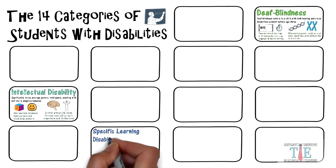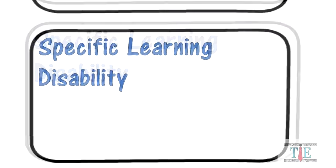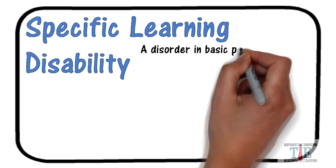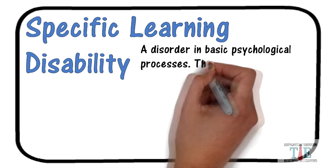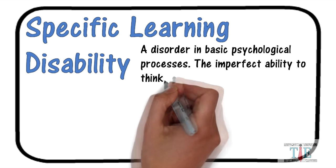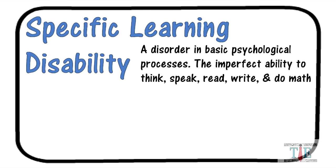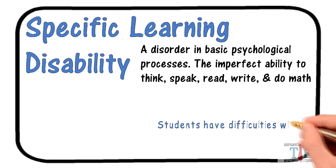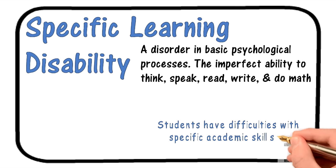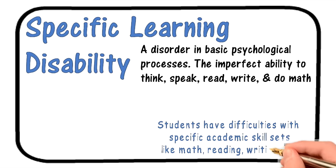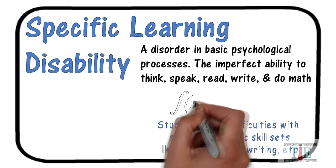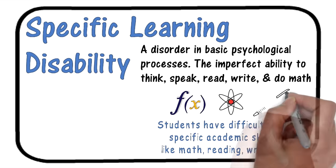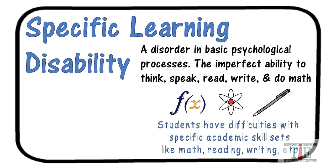Next up: specific learning disability. Specific learning disability can be defined as a disorder in basic psychological processes and the imperfect ability to think, speak, read, write, and do math. Students have difficulties with specific academic skill sets, like math, reading, writing, etc. Students may struggle processing information in one subject or skill set as opposed to another skill set.